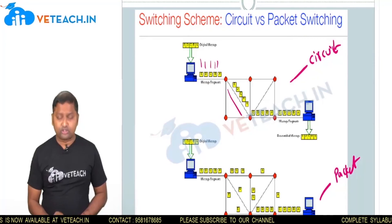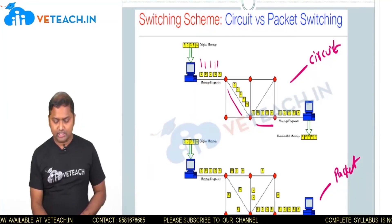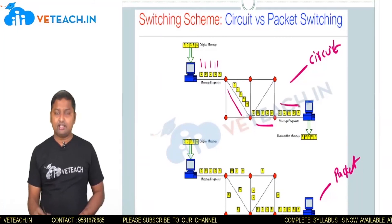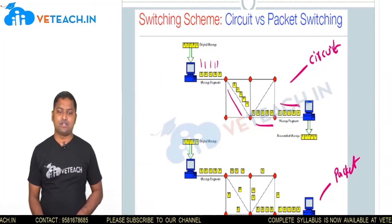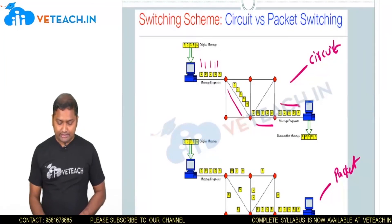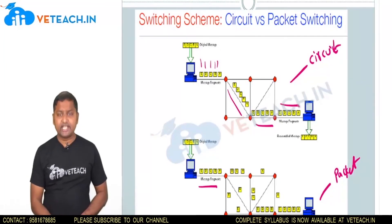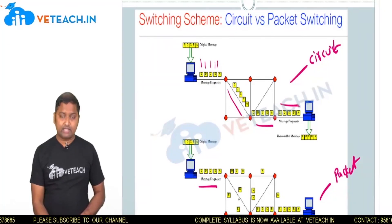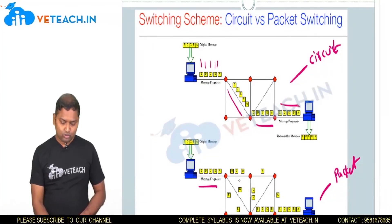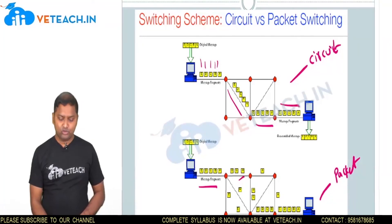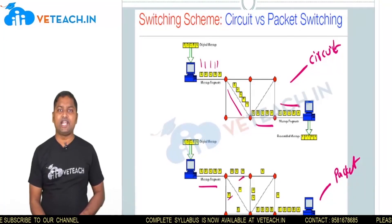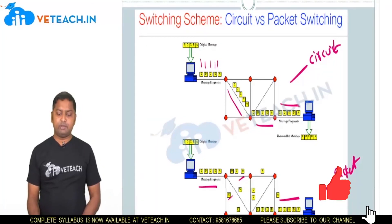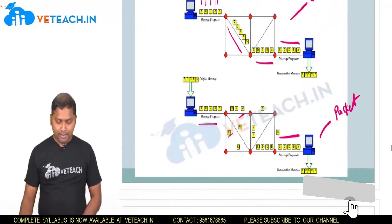In circuit switching, whatever order we are sorting, the same order will follow until it reaches the destination. In packet switching, we take the order but by using some algorithms, we are giving priority — which packet may send first, which packet may send late. But finally, we will transmit all the data. This is the difference between circuit switching and packet switching.